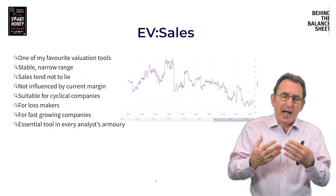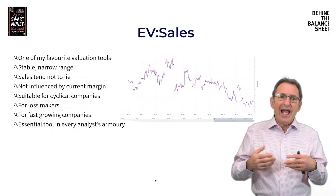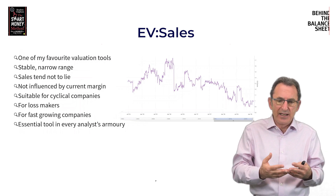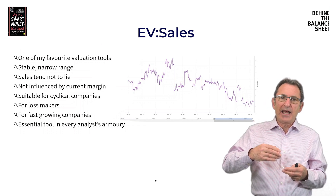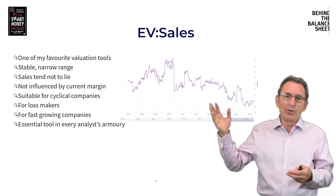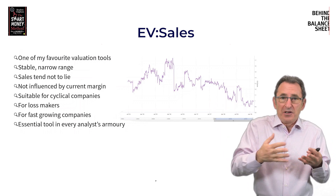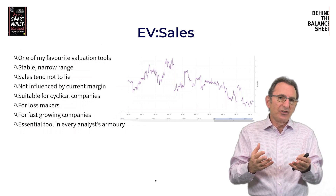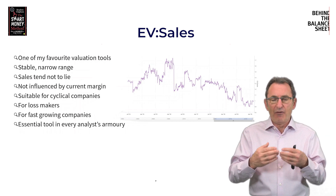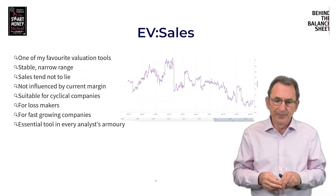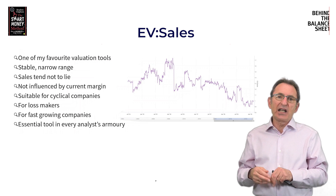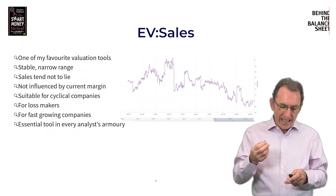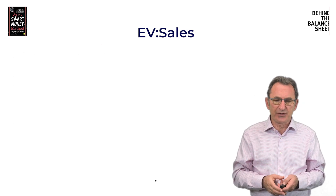EV to sales is not influenced by how much money you're making today. Any earnings-based measure is influenced by what the margins are today. So if you're making much better margins than normal, the stock will appear very cheap. But if you use EV to sales, you get a much better perspective of where that valuation really lies. And obviously, if you've got a company that's a loss maker or a fast-growing company, EV to sales is also really useful.